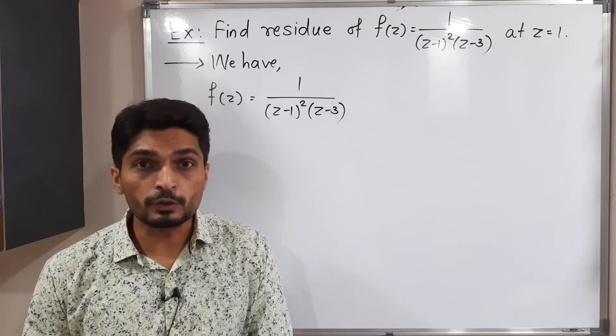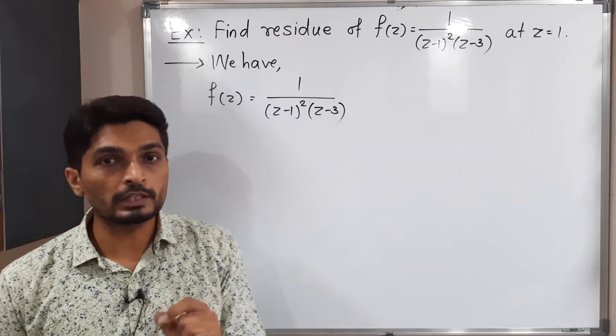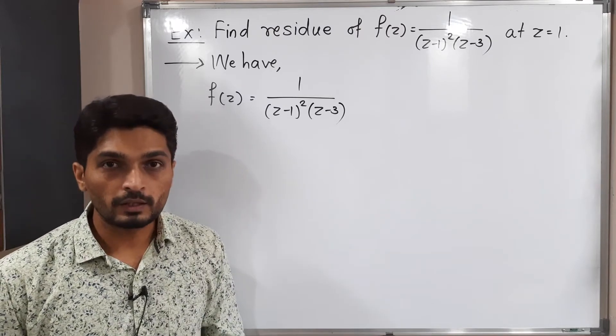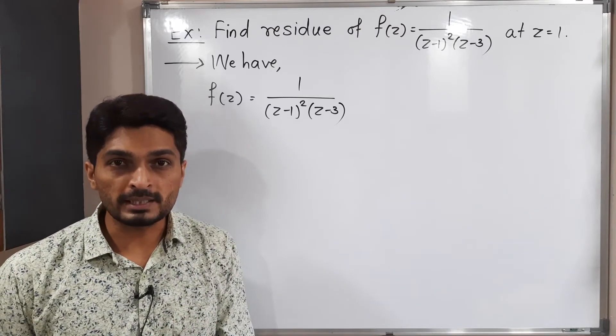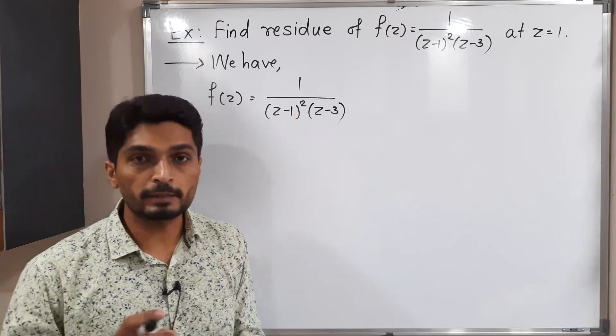But see, we have to find the residue only at z equals 1. So that means we have to focus only on point z equals 1. z equals 1 is basically a pole of order 2 since this bracket has power 2. Let me write that thing.